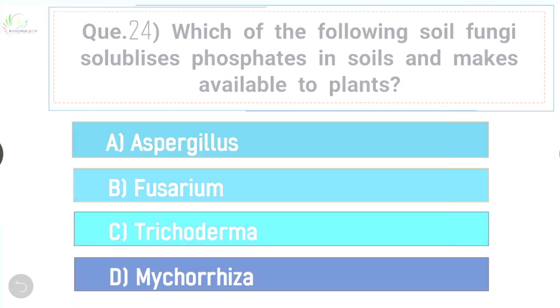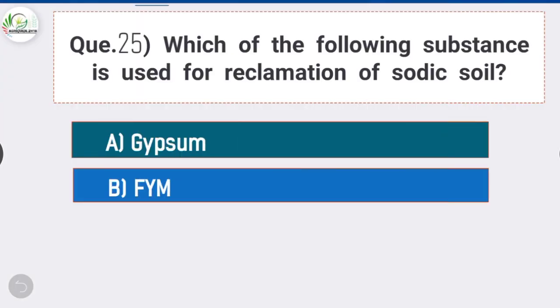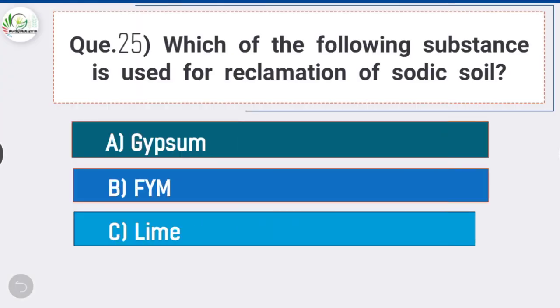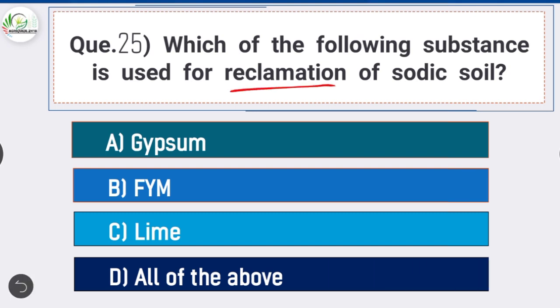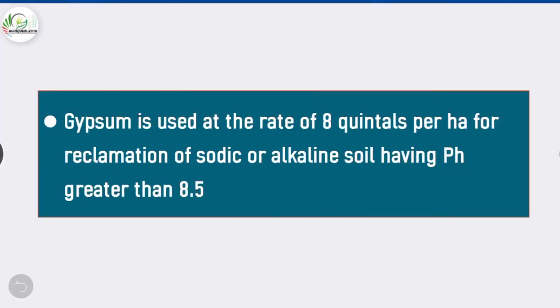Question number 25: Which of the following substance is used for the reclamation of sodic soil? Answer is option A, gypsum. Gypsum is used at the rate of 8 quintal per hectare for reclamation of sodic or alkaline soil which is having a pH greater than 8.5.